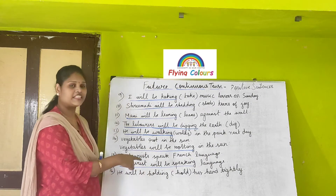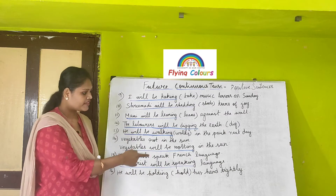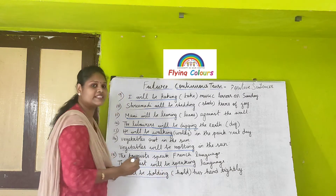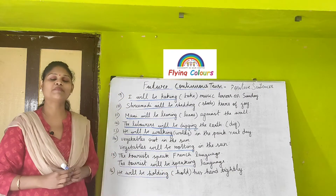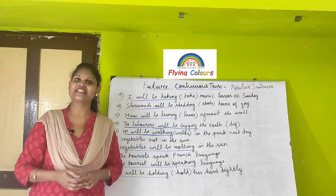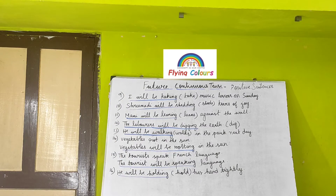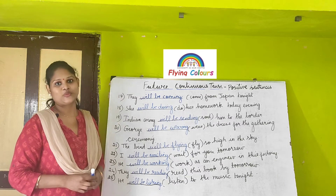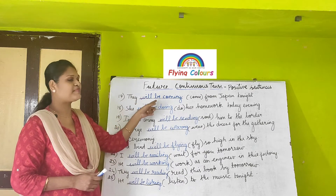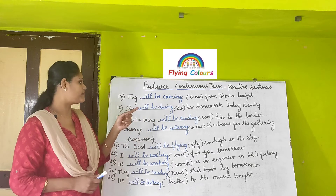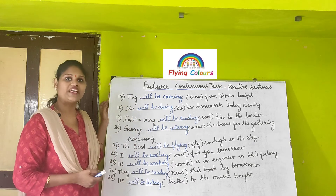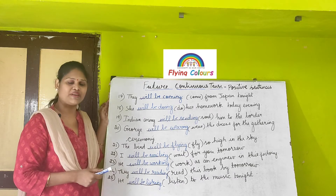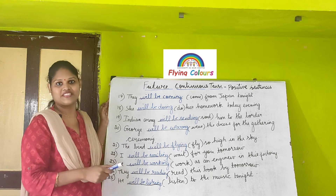Next: 'He will be holding her hand tightly.' Here 'he' is the subject, plus will plus be plus 'holding' as the present participle. Then: 'Day will be coming from Japan tonight.' 'Day' is the subject, plus will plus be plus 'coming' as the present participle. Then: 'She will be doing her homework today evening.' She plus will plus be plus 'doing' — this is future continuous tense.